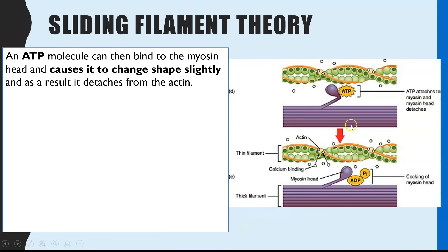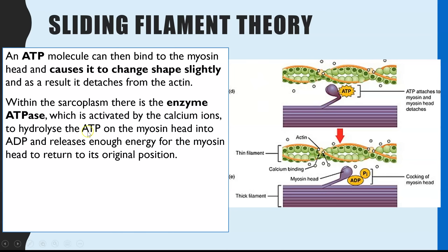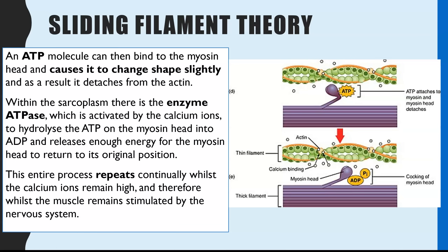The next step is that a new ATP molecule can bind to the myosin head. This causes the head to change shape slightly, meaning it's no longer complementary to the actin binding sites and as a result it detaches. Within the sarcoplasm there is an enzyme called ATPase, which is activated by the calcium ions to hydrolyse the ATP attached to the myosin head. This releases enough energy so that the myosin head — now with ADP attached — can return to its original position, and the entire process can then repeat.